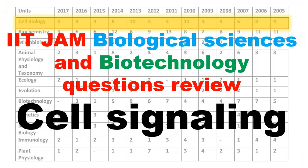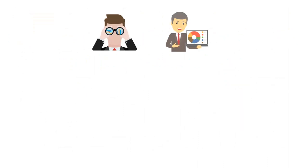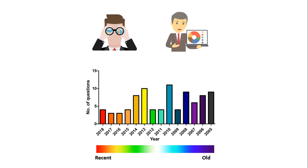Hi and welcome to another video of IIT JAM biological science and biotechnology question reviews. Today's topic is cell signaling. After detailed analysis of previous year questions, I came to a conclusion with detailed statistics on how many questions are asked from the cell biology section. On average, roughly five questions are asked every year from this topic, and among those, roughly one or two questions every year are from cell signaling. The topic is easy and a high yield topic.